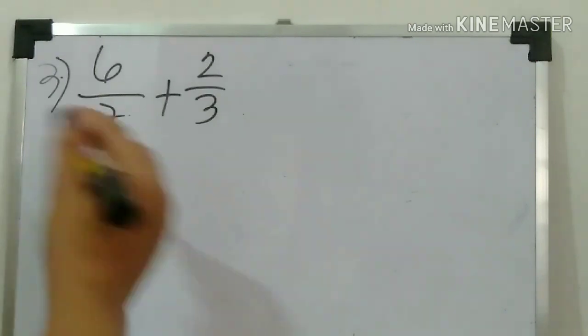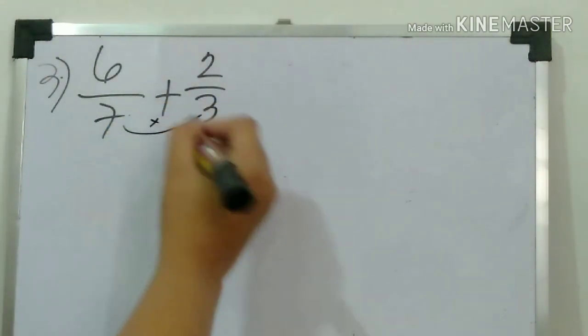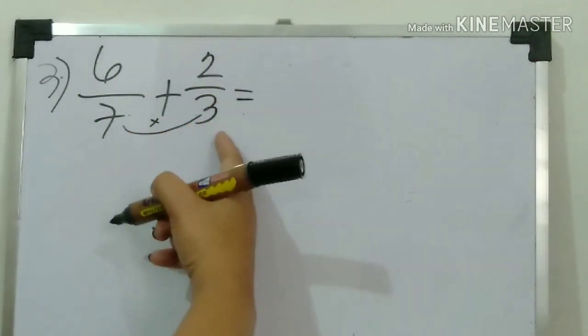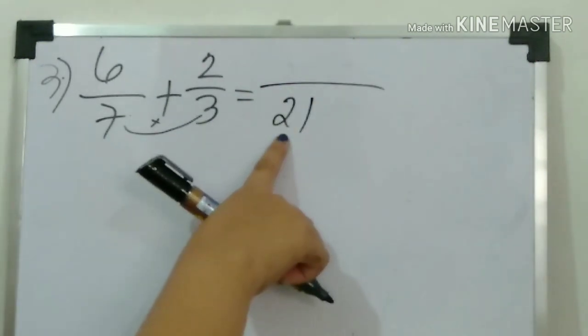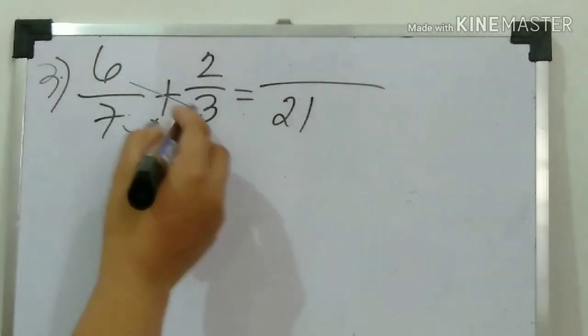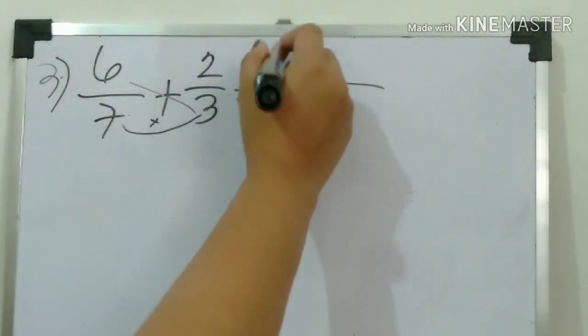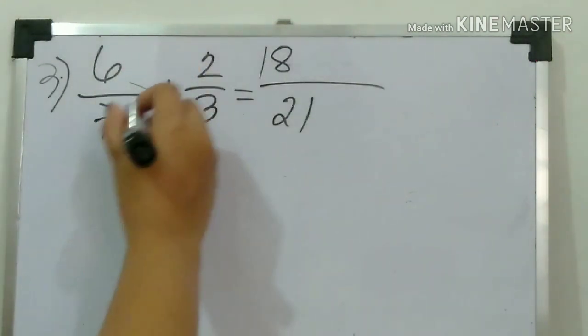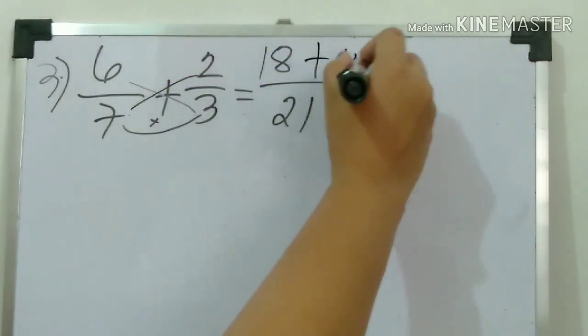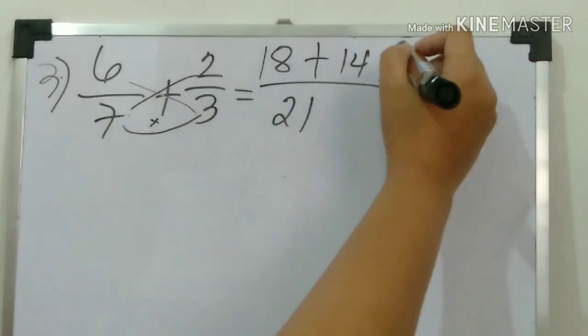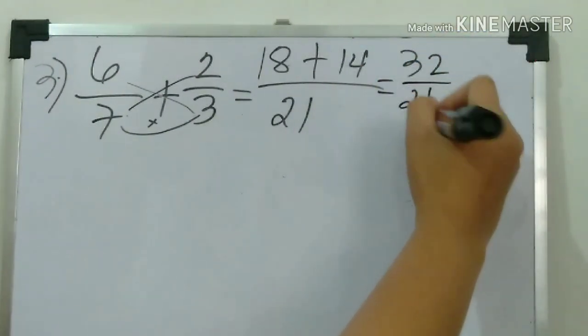After answering, continue. Let's start: seven times three. We always multiply the denominator first. So seven times three equals twenty-one. And then cross multiply: six times three equals eighteen. Next, seven times two equals fourteen.